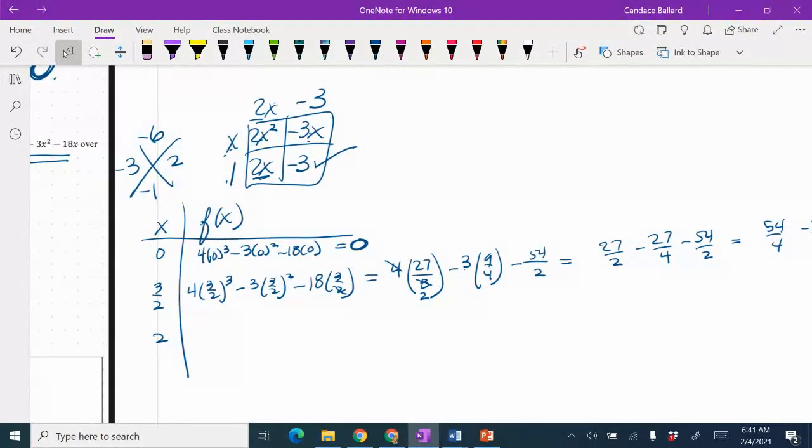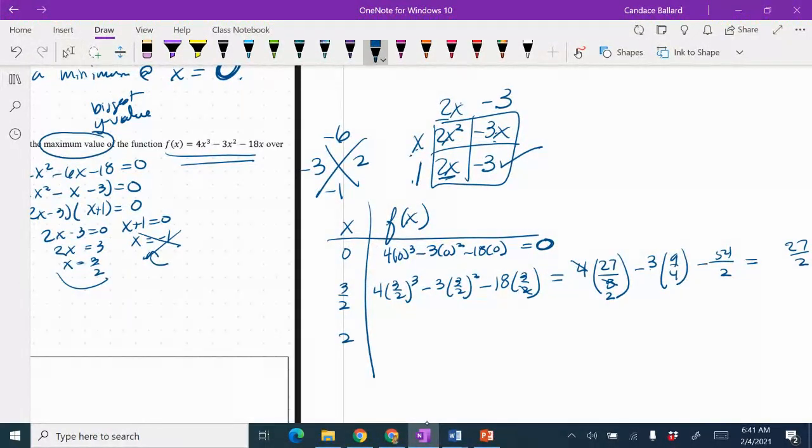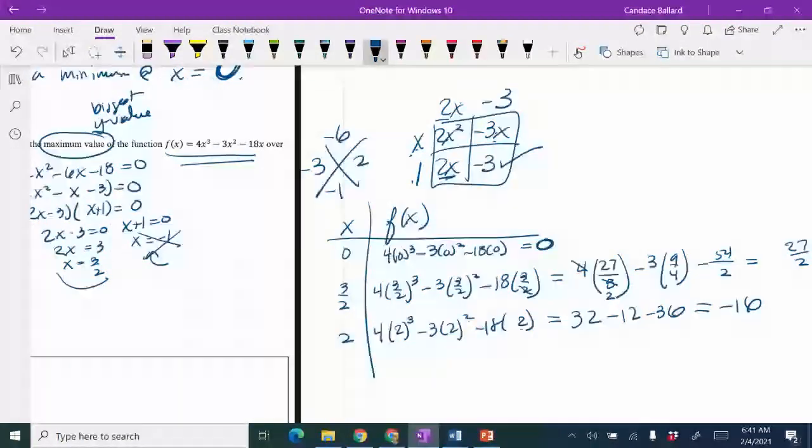All right, we're going to now put in a 2. So we've got 4 times 2 cubed minus 3 times 2 squared minus 18 times 2. All right, so when I do that, I get 2 cubed is 8 times 4 is 32. 2 squared is 4 times negative 3 is negative 12. 2 times negative 18 would be negative 36. And when I add all that up, I get negative 16.